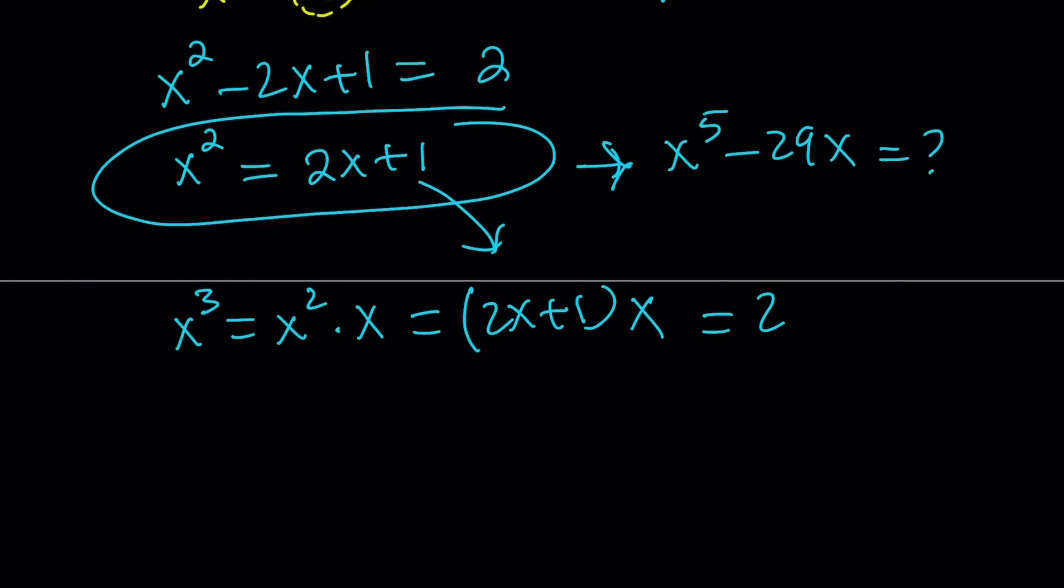That is going to be 2x^2 + x. But you can always replace x^2 with something. That's the beauty of this method. So, you can replace x^2 with 2x + 1 again. Just keep doing it until you get a linear term. And you get 5x + 2. So, remember, this is x^3.